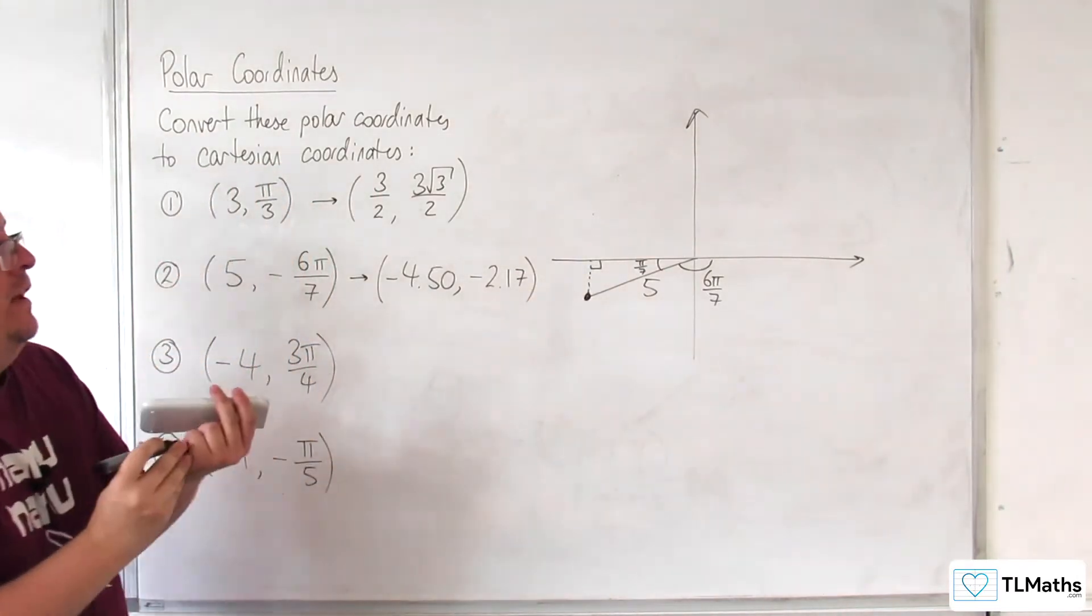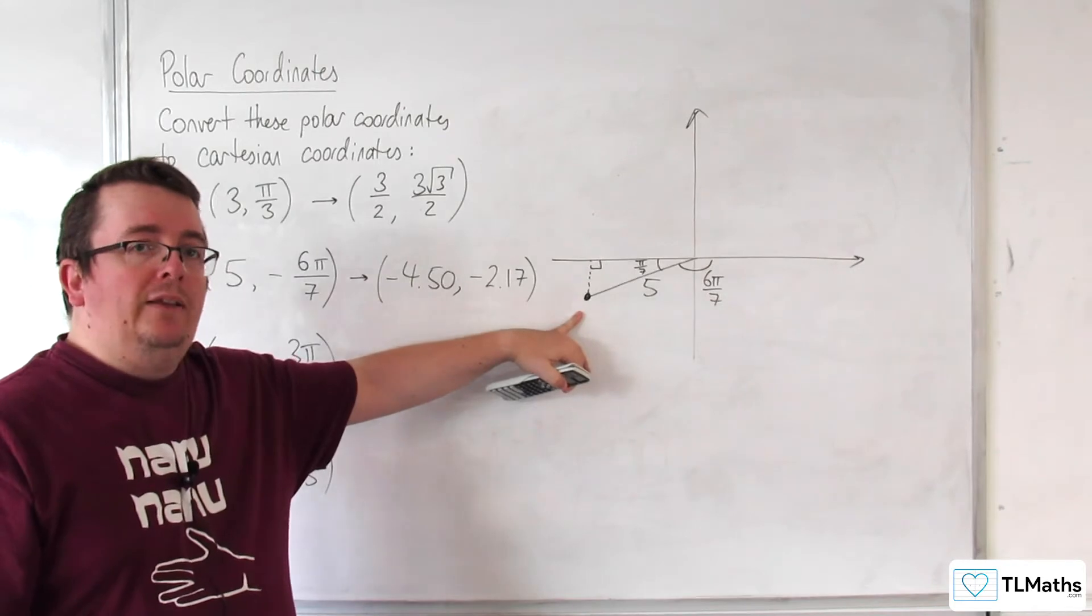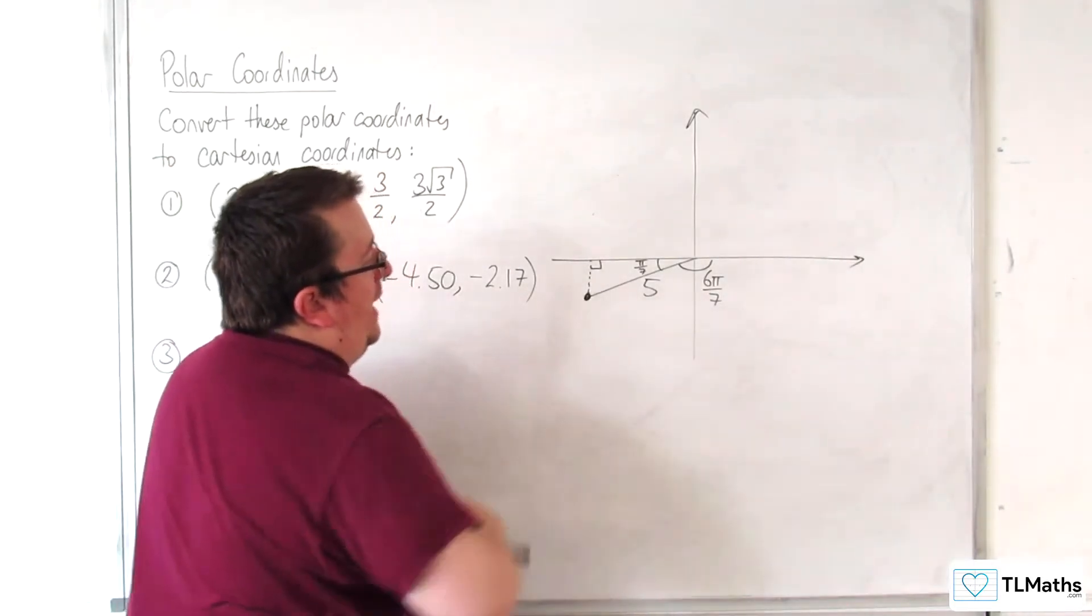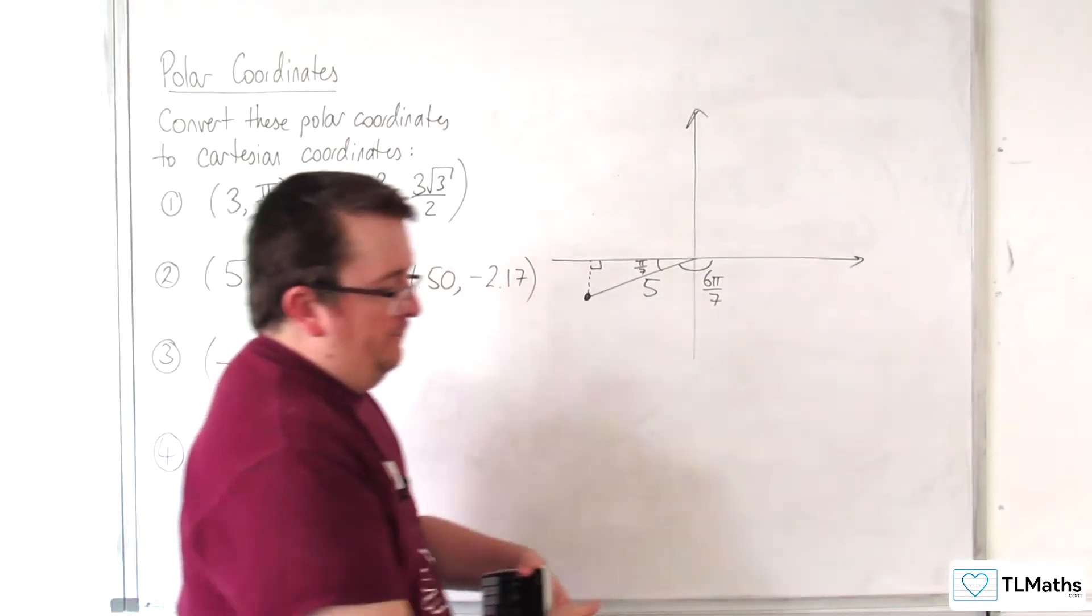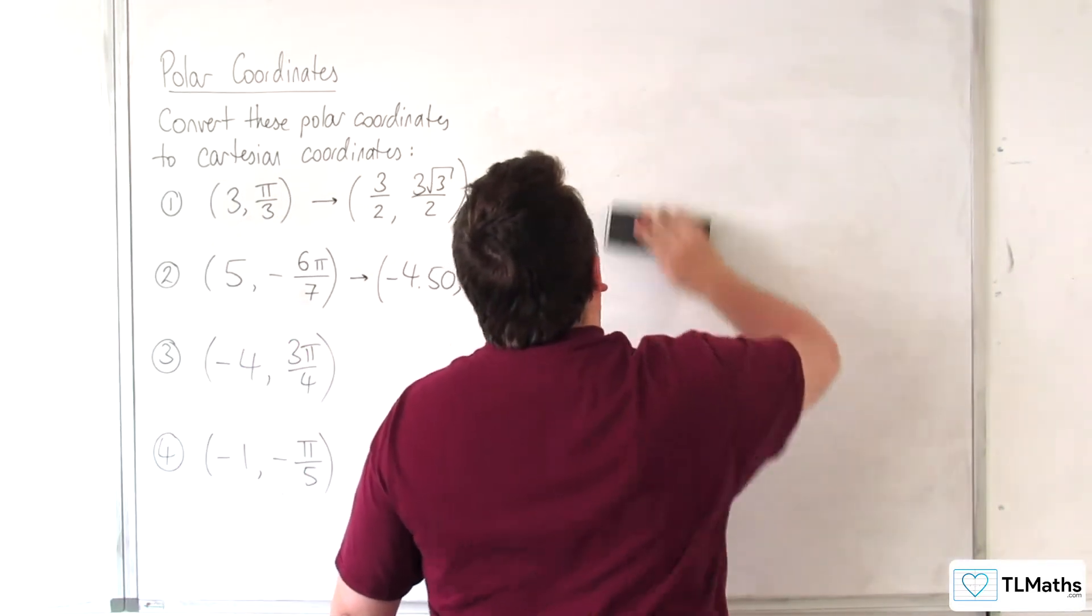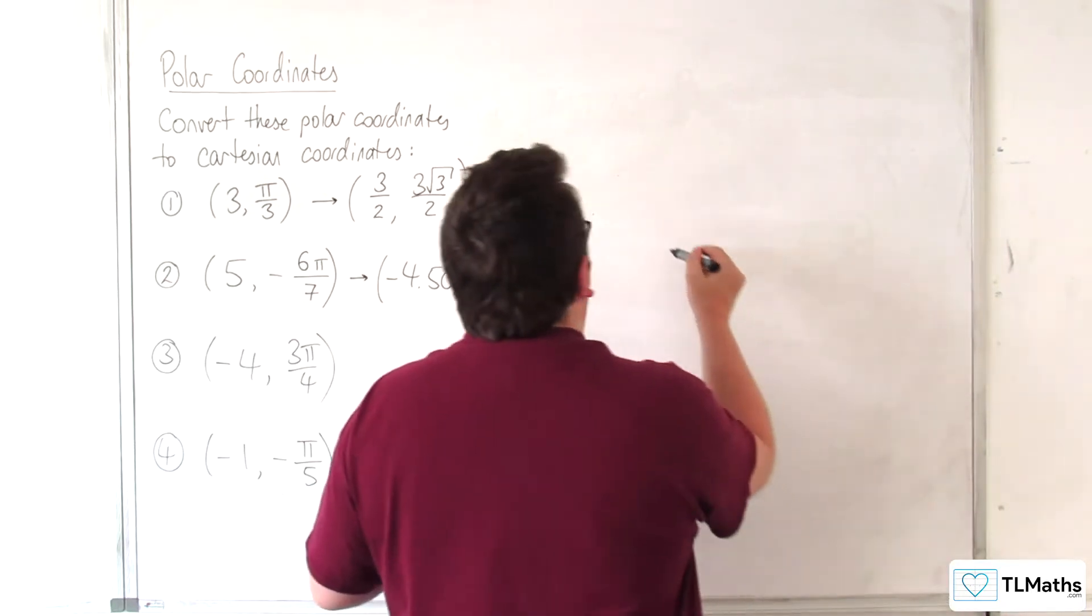Okay. And that fits with where our diagram places the point. So, this is really kind of a nice check to make sure that we are in the correct quadrant, that this is giving us the correct result. Okay. Right. Let's take a look at number 3. So, minus 4, 3 pi over 4.